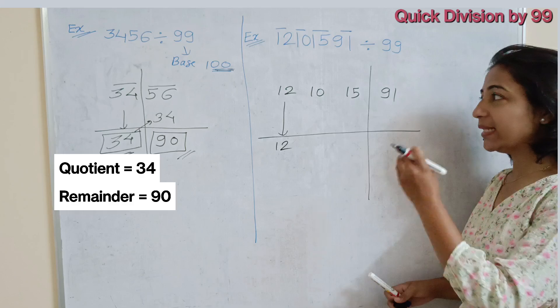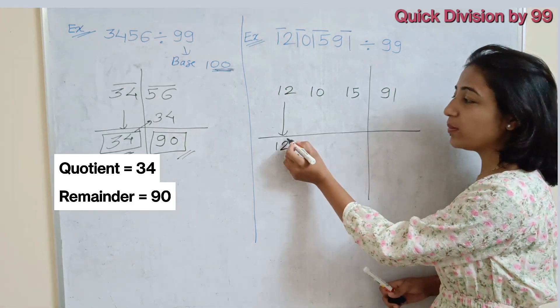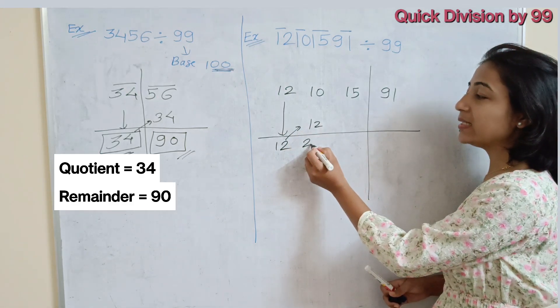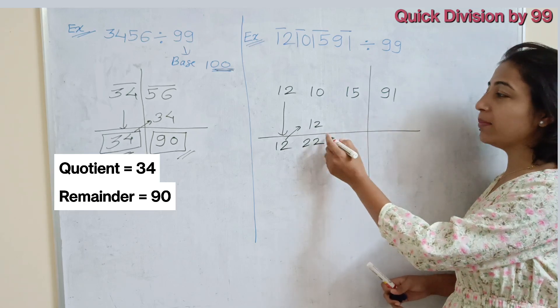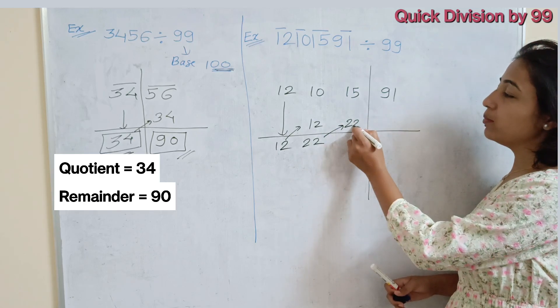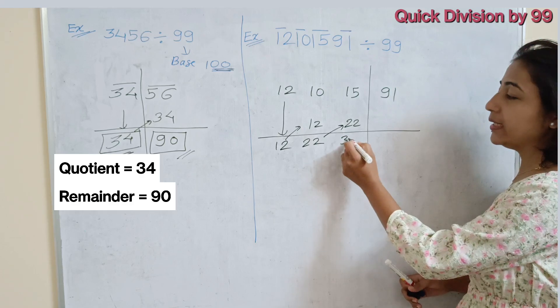After that, that pair you have to add in the next number. That means, this 12 you have to add in this 10, it gives the answer 22. Now, add this 22 in the next number.